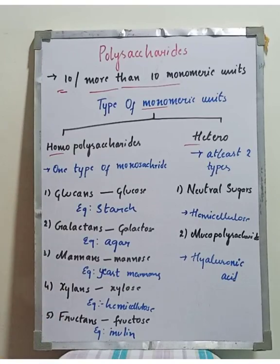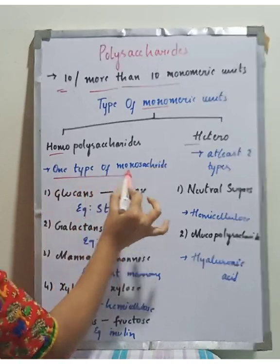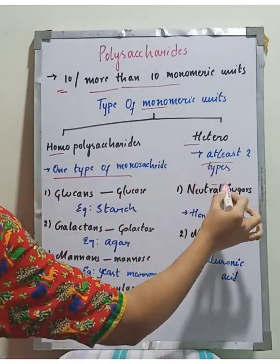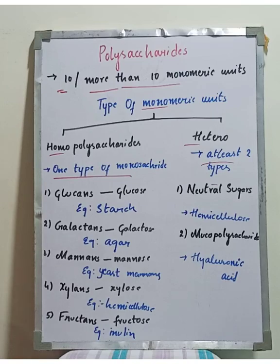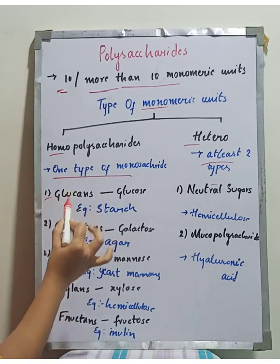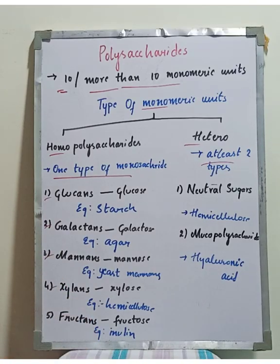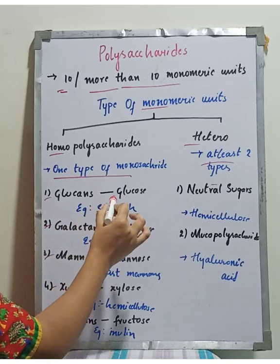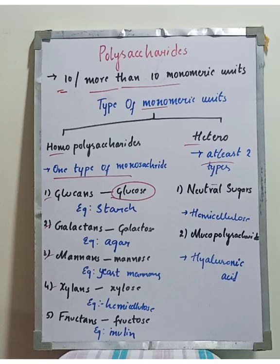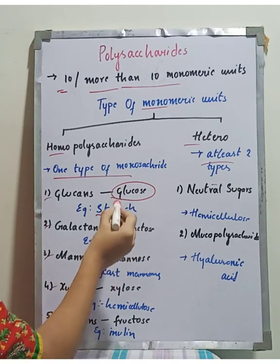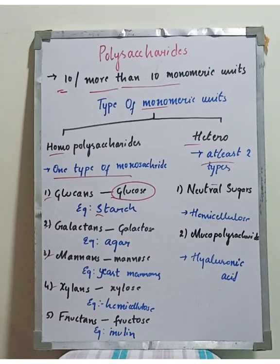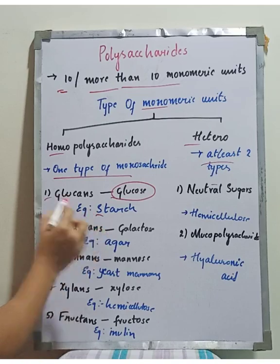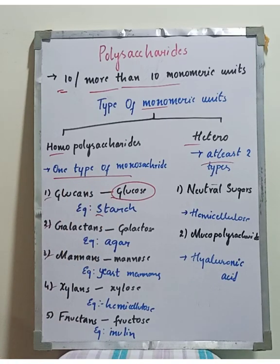Homopolysaccharides contain only one type of monosaccharide. They are further classified as: glucans (containing glucose), galactans (containing galactose — e.g., agar), mannans (containing mannose), xylans (containing xylose — e.g., hemicellulose), and fructans (containing fructose — e.g., inulin).